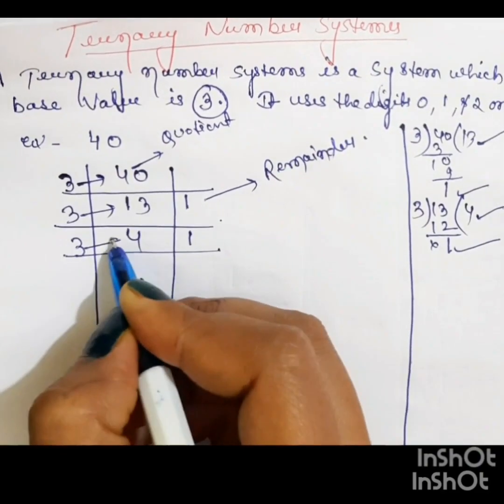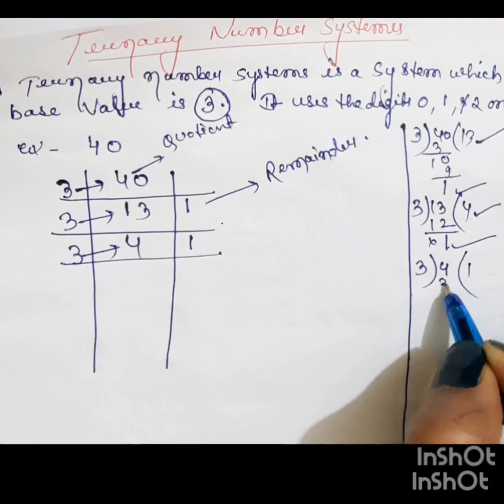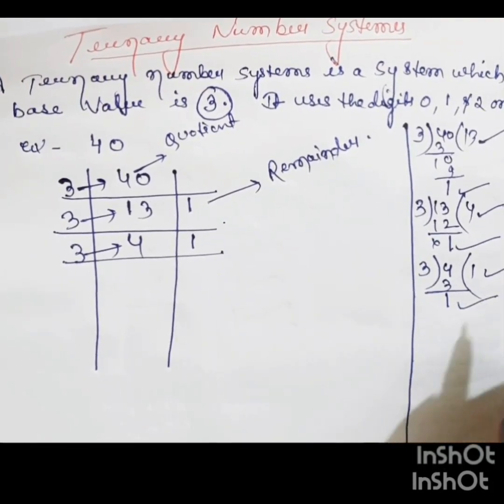Again, 3 divided 4. 1 is quotient. And 1 is remainder.